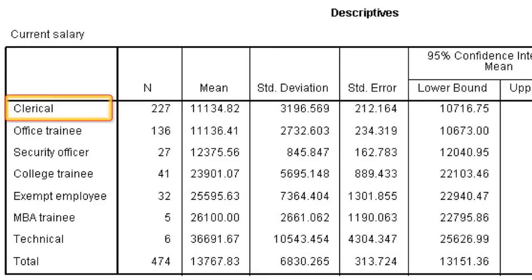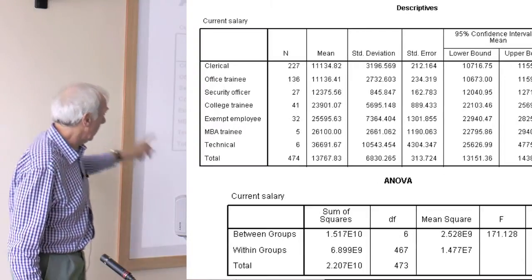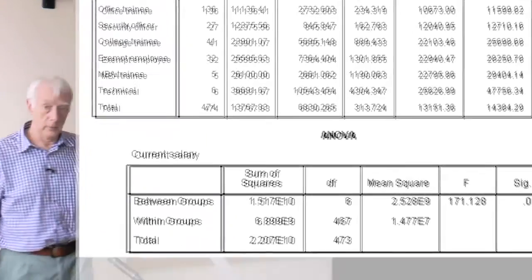We've got, in this case, what, one, two, three, four, five, six, seven different groups. So we can use the ANOVA for that. We can't use a t-test, but we can use ANOVA. And this is the result we get at the bottom here on the screen.